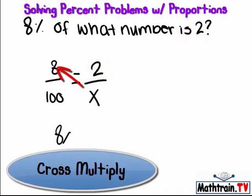We have to solve. 8x equals 200, because we cross multiply.